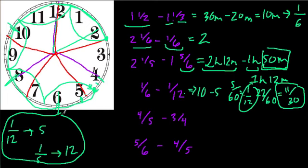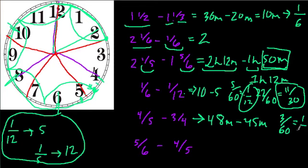So now 4/5 minus 3/4. We established that 1/5 is 12 minutes, so 4/5 has to be 48 minutes minus 3/4 is like subtracting 3 quarters of an hour or 45 minutes. That gives us 3 out of 60, divide by 3 numerator and denominator, and we get 1 out of 20, so 1/20.